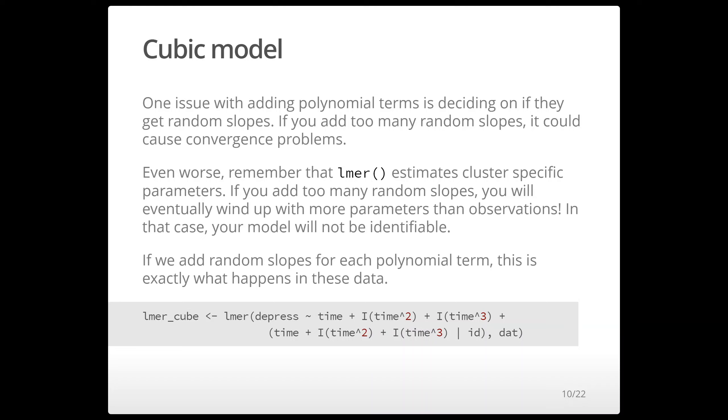So we can't add a third random slope. If you try to run this model it's going to give you an error saying that you tried to estimate a model that has more parameters than observations and this is not identifiable.